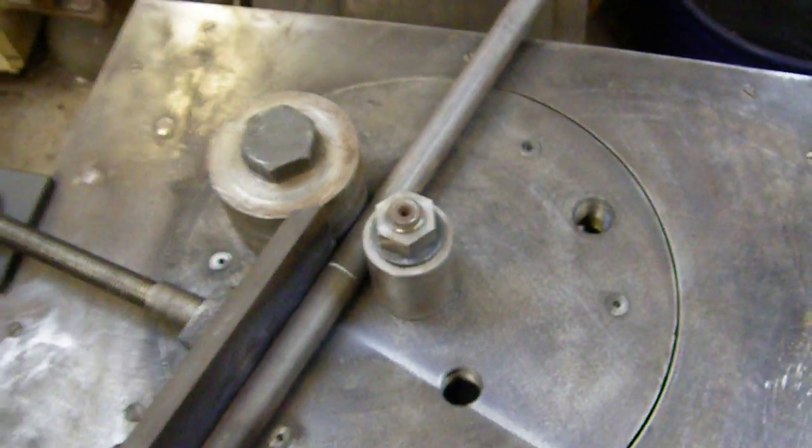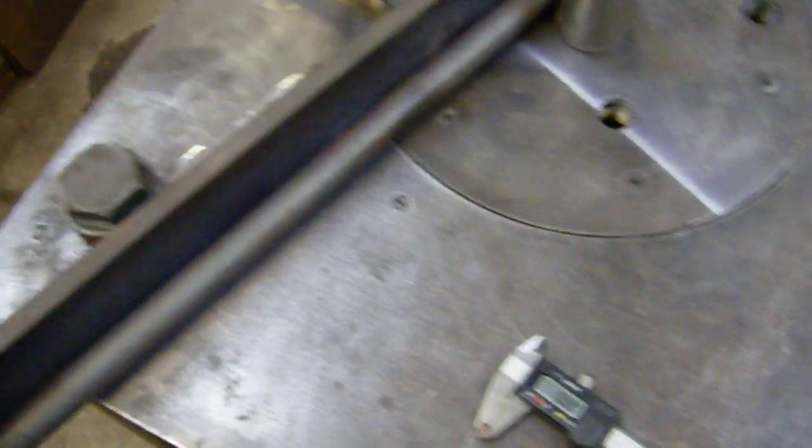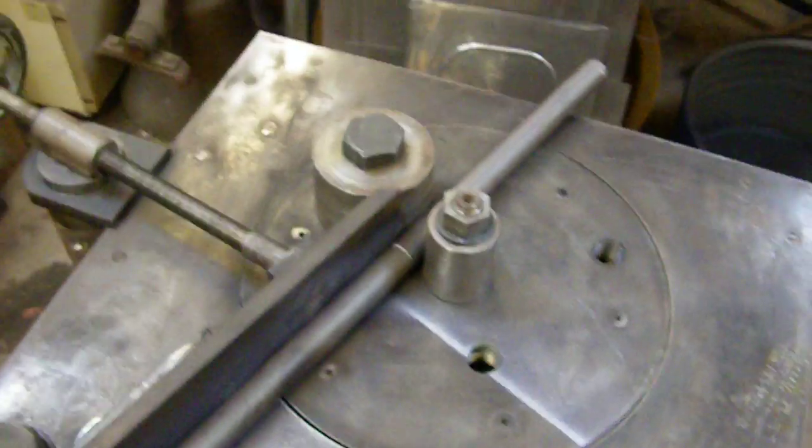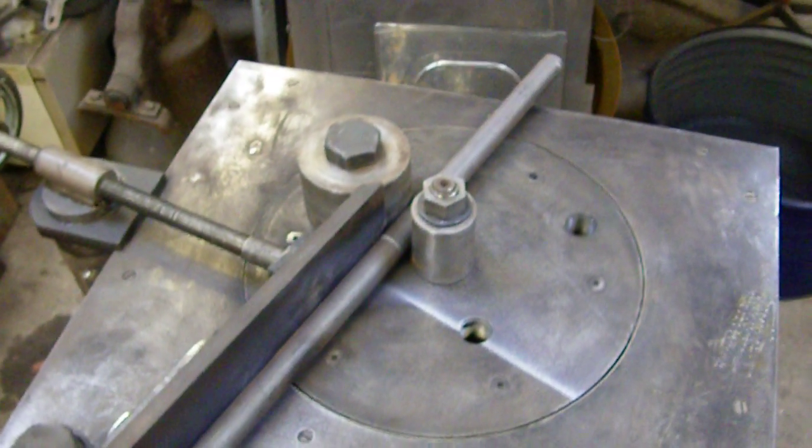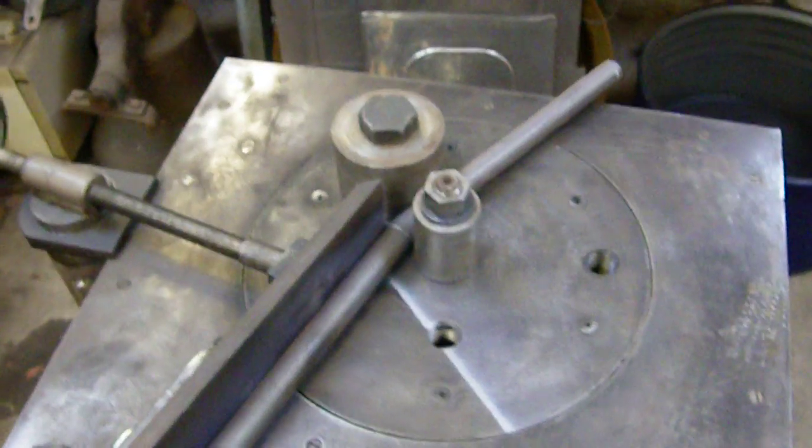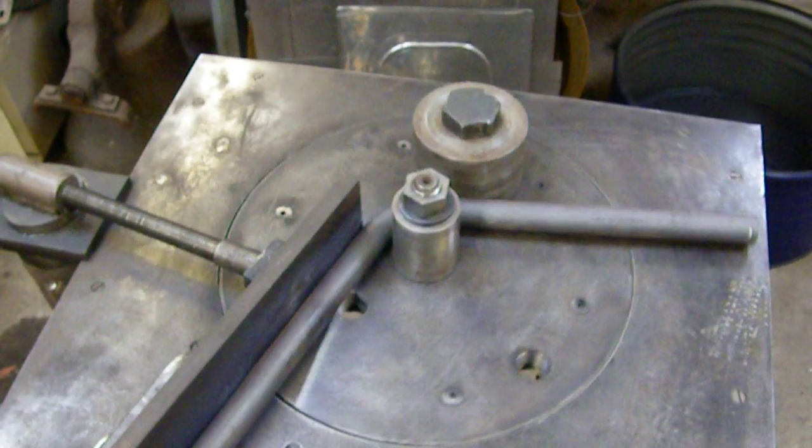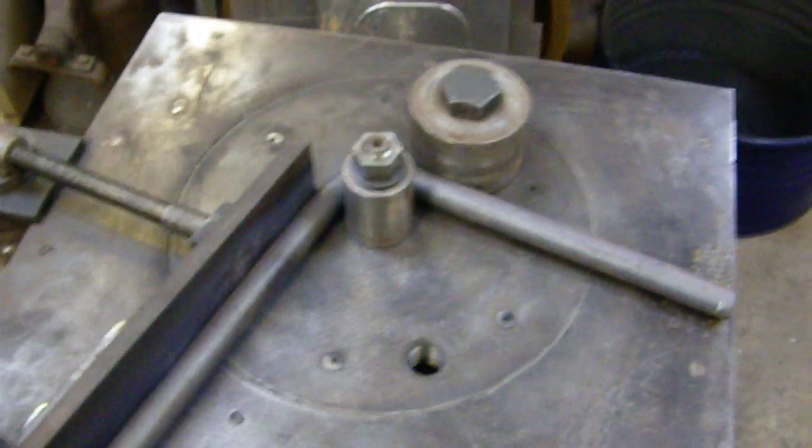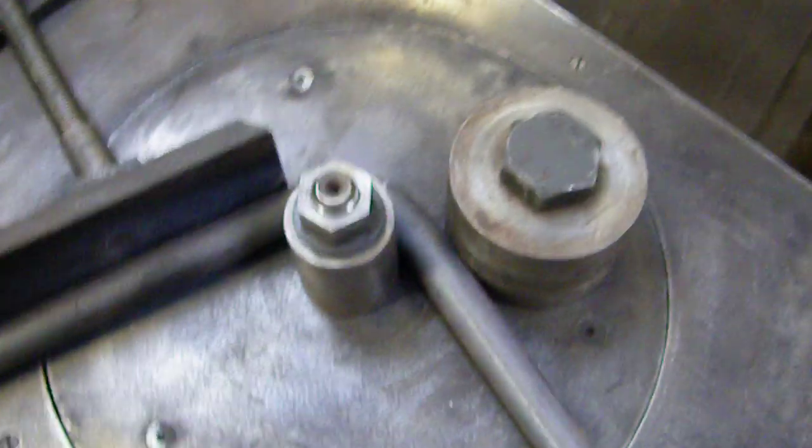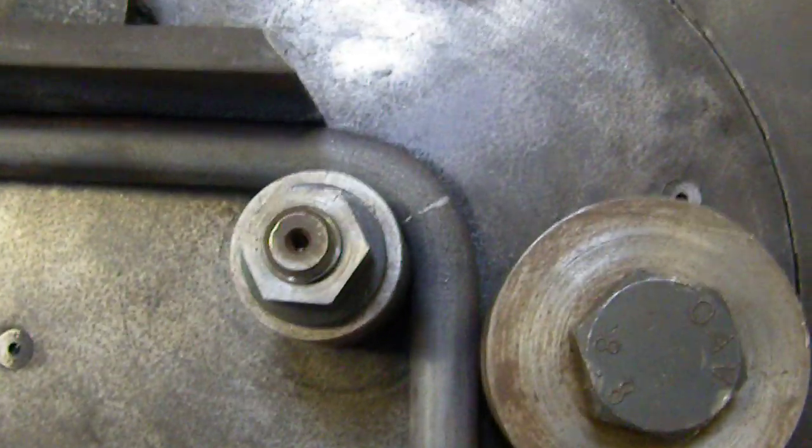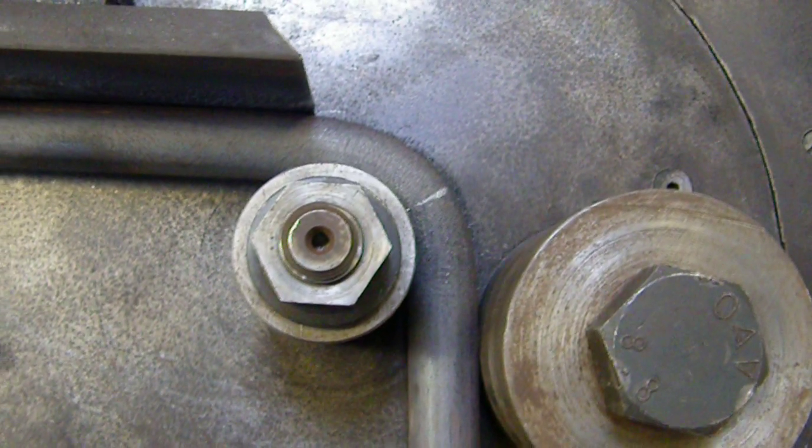And so, here we go. Shouldn't have to hold it, because it will pull the bar through when it bends it. Or if it doesn't bend it, as the case may be. Bend. Everything's set. Here it goes. That's it. Stopped automatically. Ah. About 90 degrees.